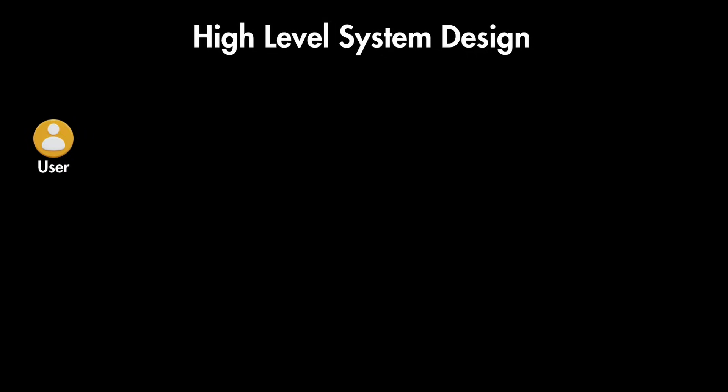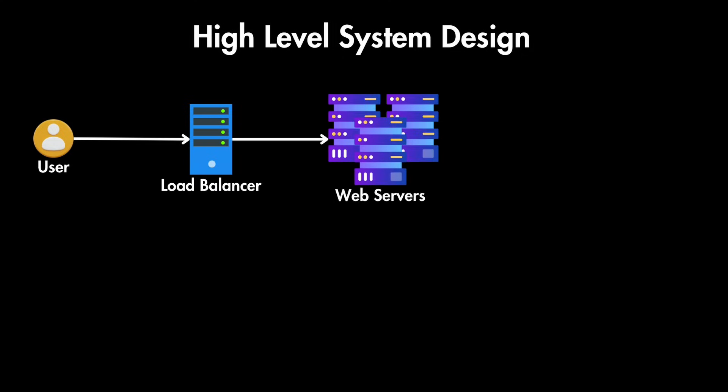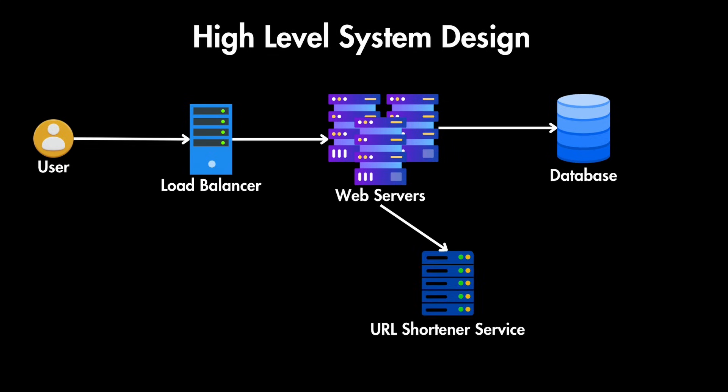With this information we can proceed to the high-level design. The system architecture breaks down into key components: users send long URLs to be shortened or send a short URL to be redirected. All requests go through a load balancer to distribute traffic across multiple web server instances for high availability. These server replicas handle incoming HTTP requests, store data in the database, or retrieve shortened URLs. We also need a URL shortener service containing the logic for generating short URLs, storing URL mappings, and retrieving original URLs for redirection.